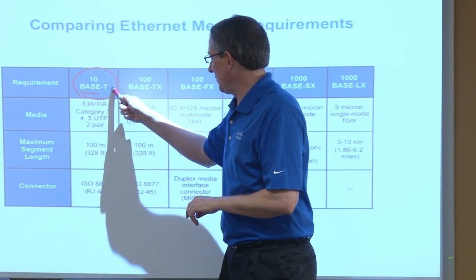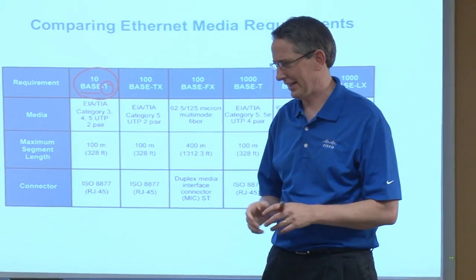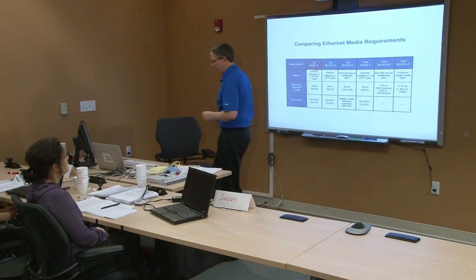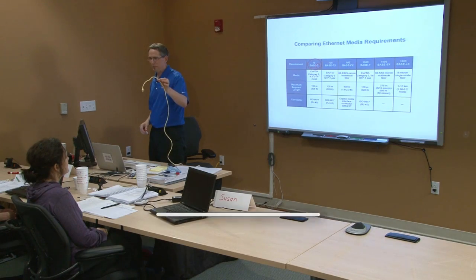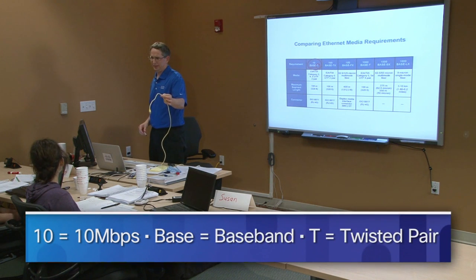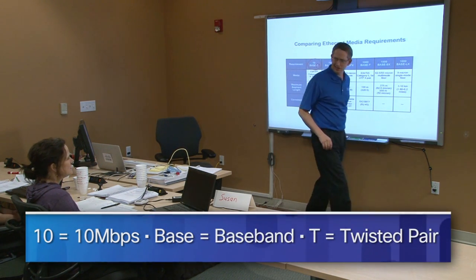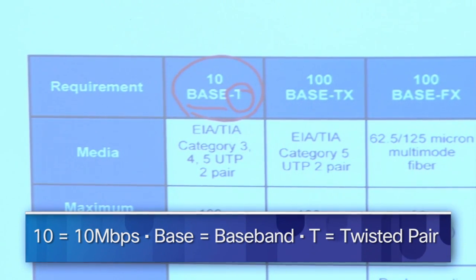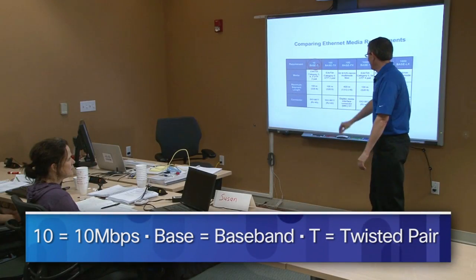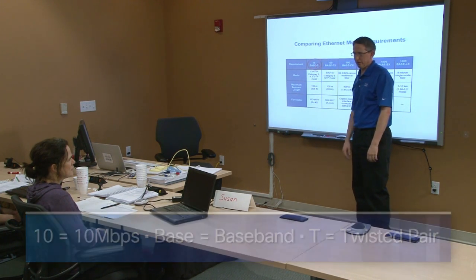So: 10 megabits, baseband, and then we have this T. Anybody want to guess what T might mean as we look at this cable? Twisted pair — that's exactly what it means. So if somebody says they've got a network running 10BASE-T, that means you're at a really slow speed, it's baseband, it's the Ethernet standard, and you're running it over twisted pair.